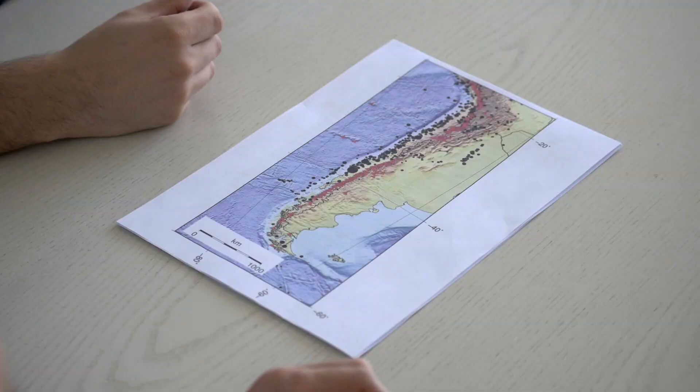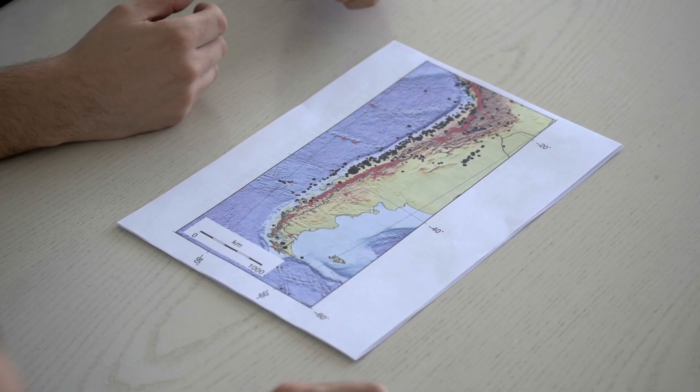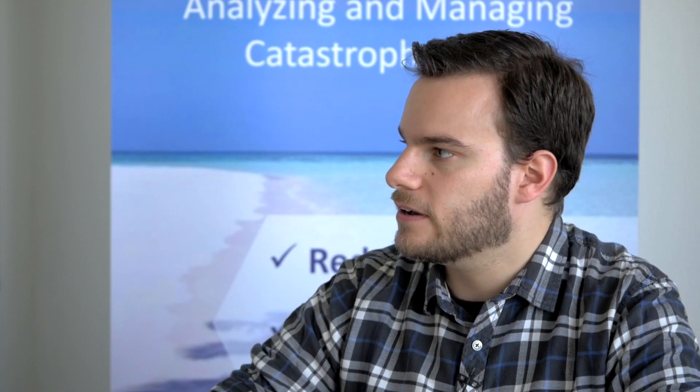Andreas, your company RiskLayer compiles risk assessments for clients around the world. Today you have an example for us from Chile. Why is Chile such an interesting country? There are several reasons. For one, it is one of the countries in the world most vulnerable to earthquakes. Secondly, due to the high mountains that begin relatively close to the coast, many cities are located directly on the coast where most earthquakes also take place. Furthermore, Chile has a lot of highly vulnerable industries, for example wine growing, which has been hit hard by earthquakes several times over the past few years.